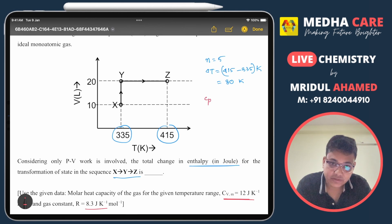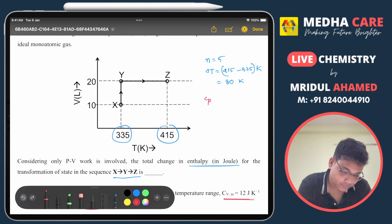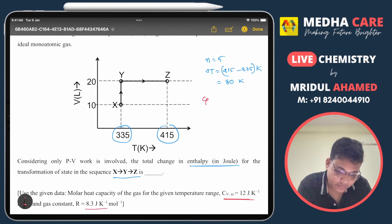So what I will do is calculate CP, molar heat capacity at constant pressure. So CPm, that is R plus CVm. R given 8.3 and CV given 12, so it is coming 20.3 Joule per Kelvin per mole.